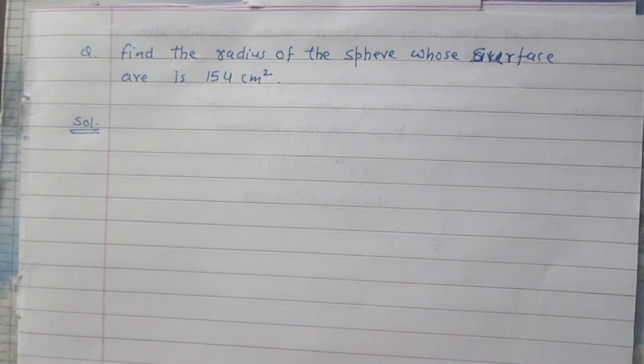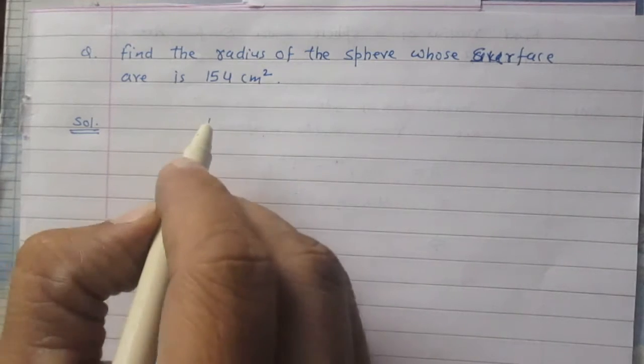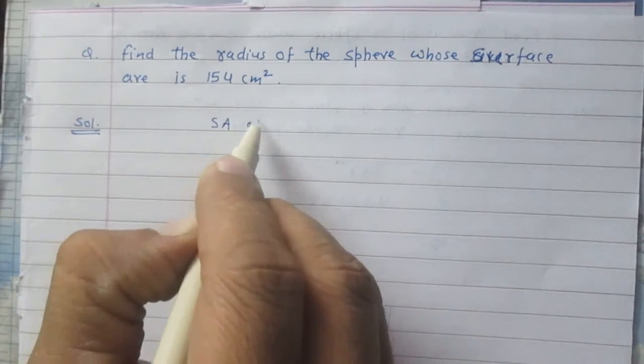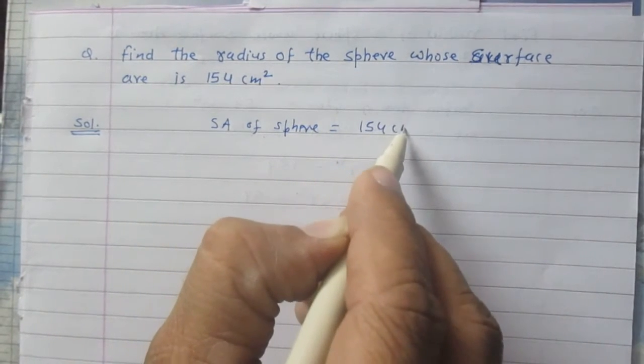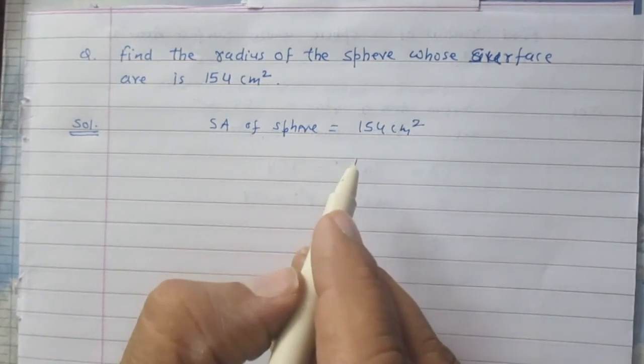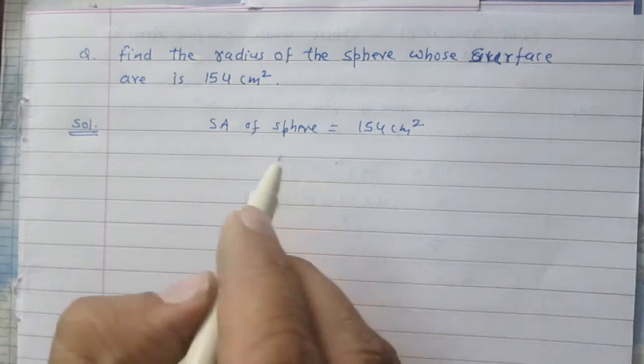Find the radius of the sphere whose surface area is 154 cm². We are given that surface area of sphere is 154 cm² and we are supposed to find the radius of the sphere.